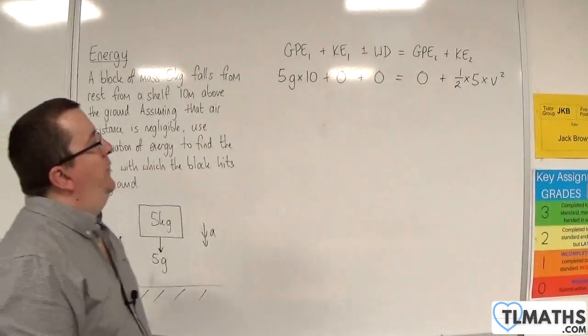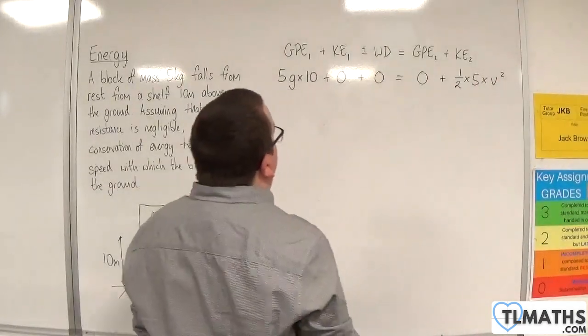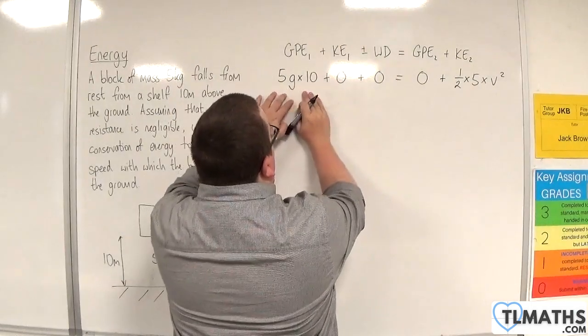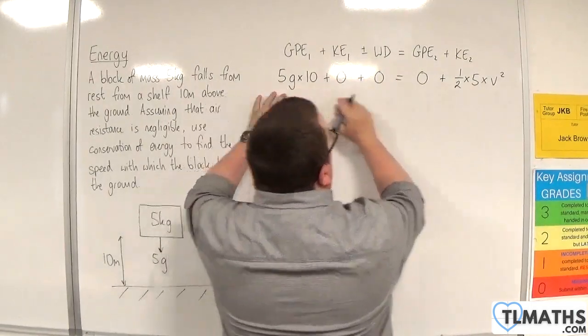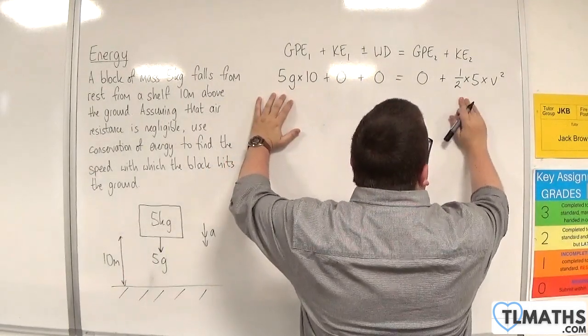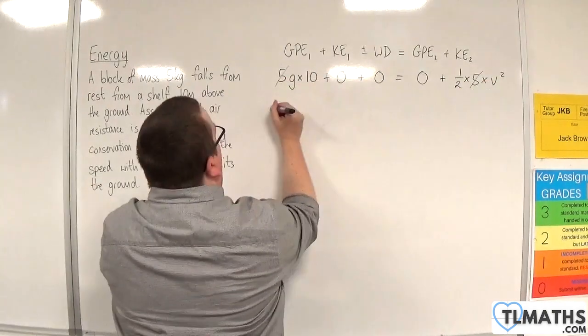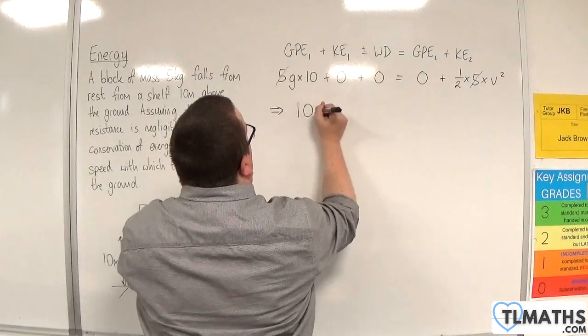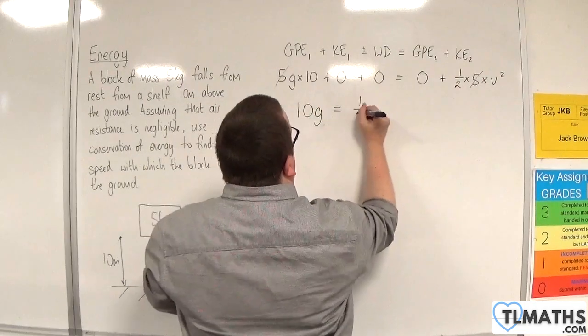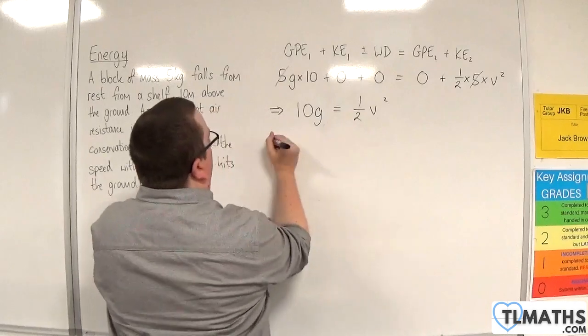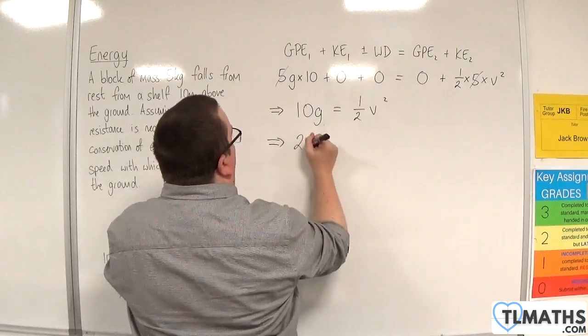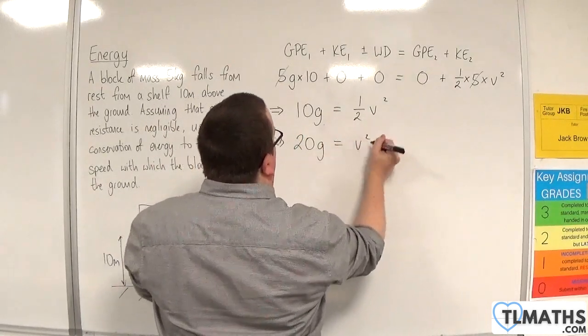So, what we've got is 50G equaling 5 halves V squared. Now, of course, we can divide through by 5 to make this easier for ourselves. So we've got 10G is equal to 1 half V squared. So 20G is equal to V squared.